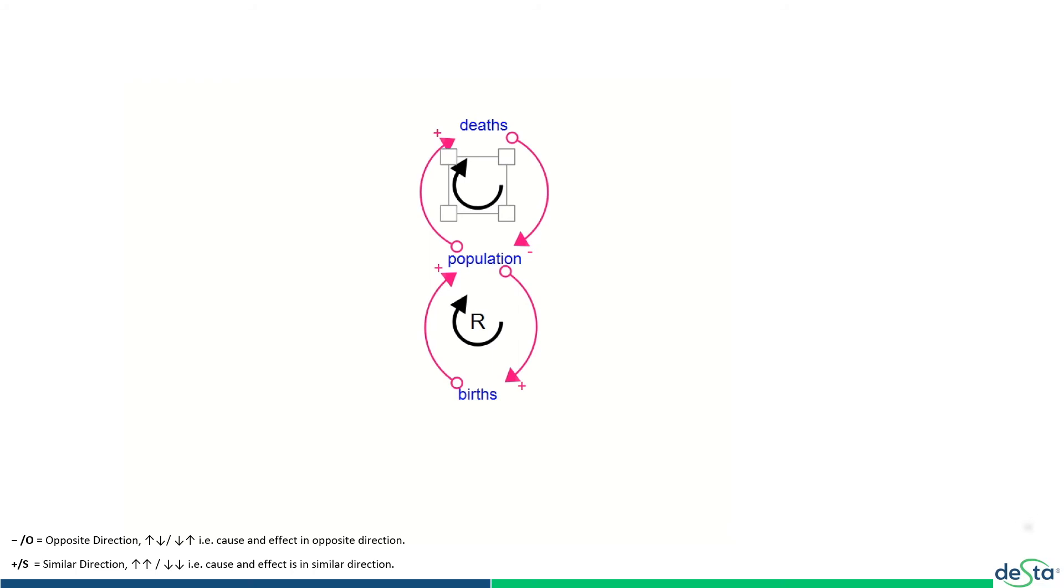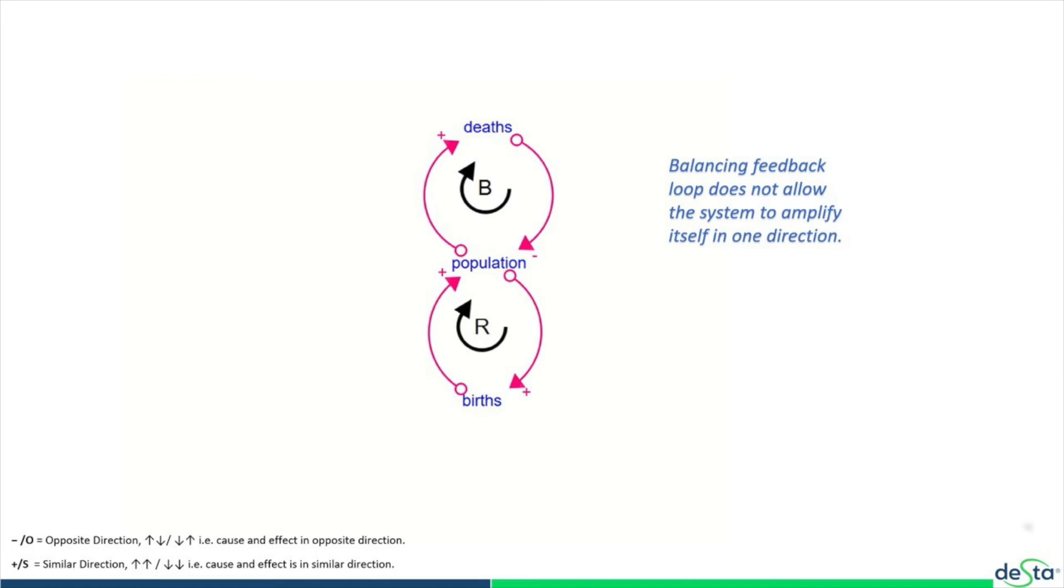It creates a feedback and keeps the system under check. So this is what a feedback loop is in systems thinking, and you must remember there are two kinds of feedback loops: reinforcing and balancing.